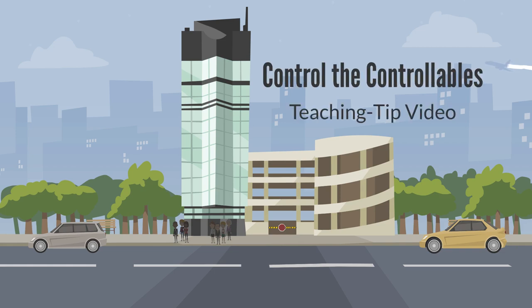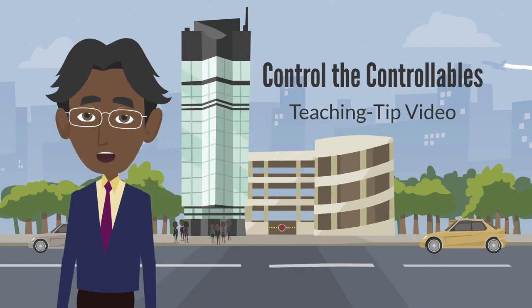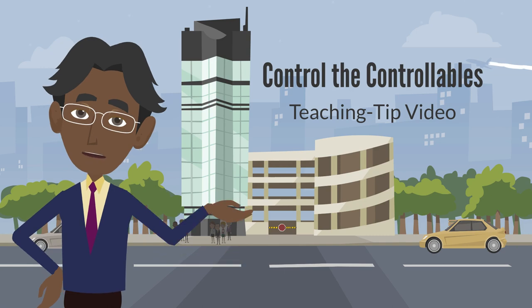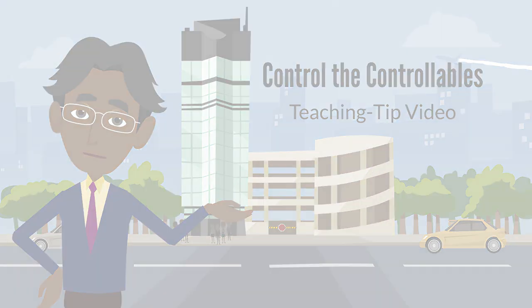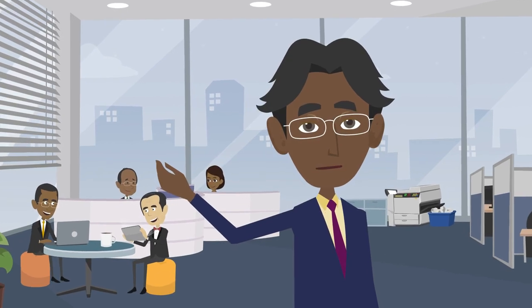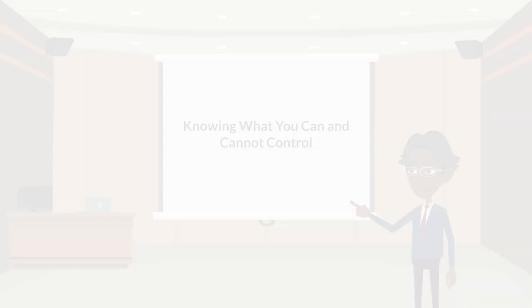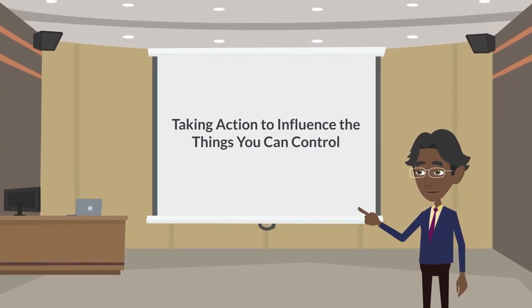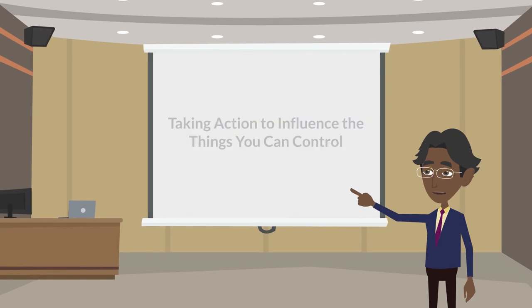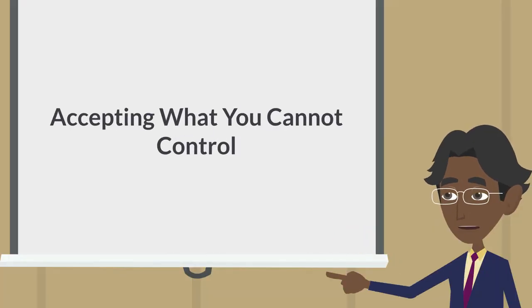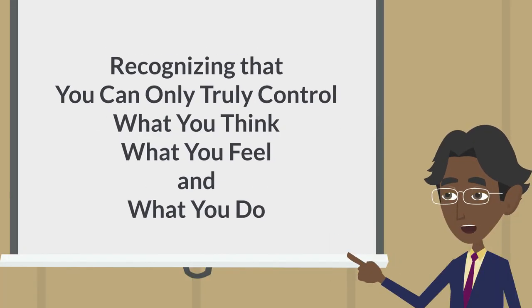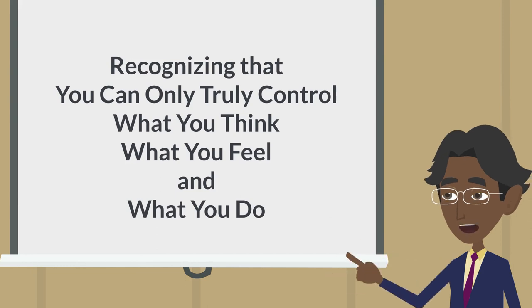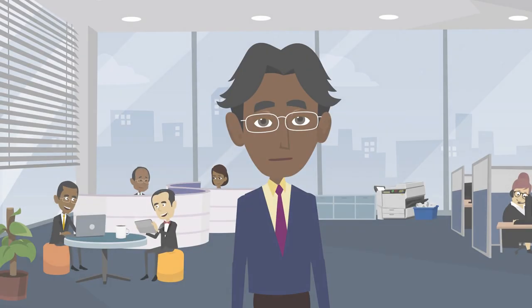In this teaching tip video, you will learn about how to control the controllables so that you can effectively teach these methods in your own courses. We will cover four different aspects of controlling the controllables: knowing what you can and cannot control, taking action to influence the things you can control, accepting what you cannot control, and recognizing that you can only truly control what you think, what you feel, and what you do. Let's get started, shall we?